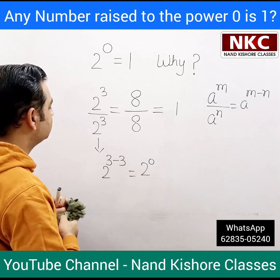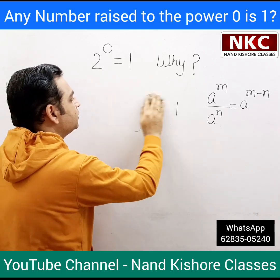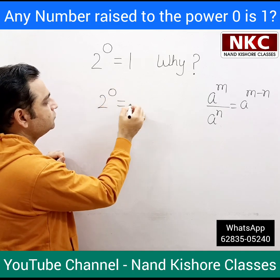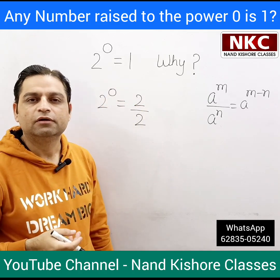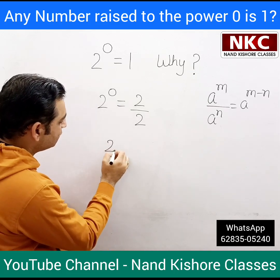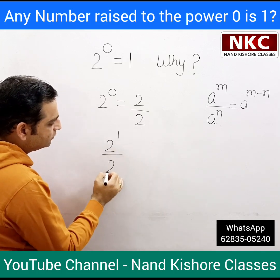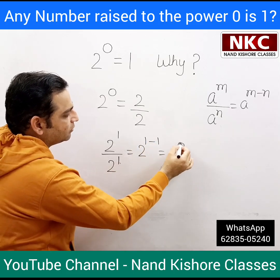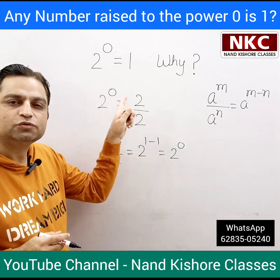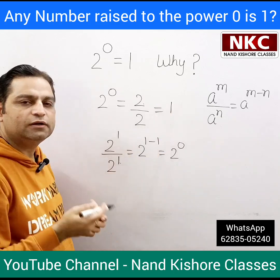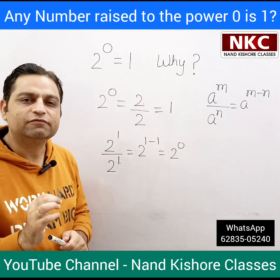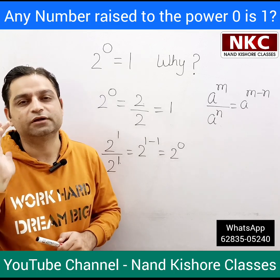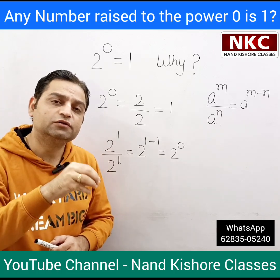In short, whenever you get power 0, that means the numerator and denominator are the same. For example, 2 to the power 0 can be written as 2 over 2. How? Because 2 alone means it is 2 to the power 1, so 2 to the power 1 divided by 2 to the power 1 gives 2 to the power 0. And 2 divided by 2 is 1. So whenever anything is raised to the power 0, it means the numerator and denominator are the same, and after reducing to lowest form we get 1.